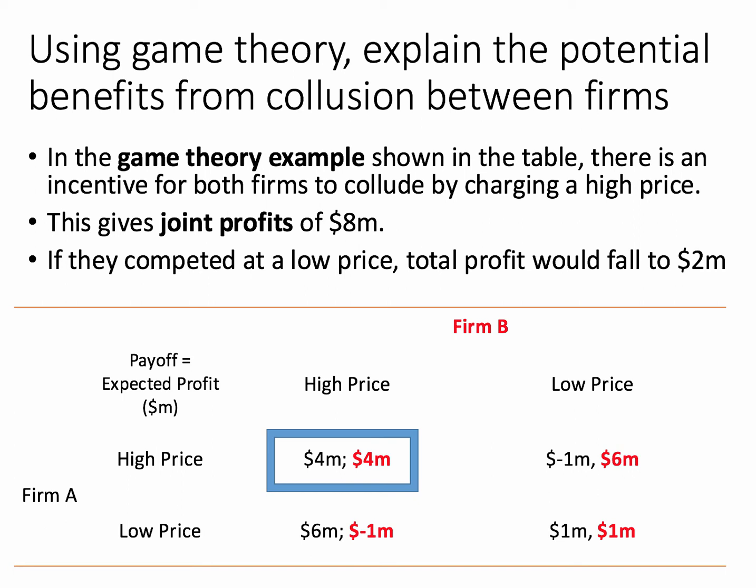However, if this collusion were to break down and they both competed at a much lower price, the total profit would fall to two million dollars. Having agreed to fix the price high, there is obviously an incentive for one firm to cheat on the agreement. For example, firm A could charge a low price, and if firm B charges a high price, firm A's profits would rise to six million dollars, inflicting a loss of one million dollars on firm B.